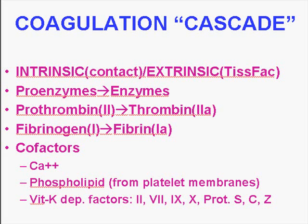We cannot escape the classical coagulation cascade, so let's talk about it. There's an intrinsic and extrinsic pathway. The extrinsic pathway is much more direct and much more powerful. The intrinsic has a lot more steps starting out with factor 12, and it's also called the contact pathway. The extrinsic pathway is called the tissue factor pathway.